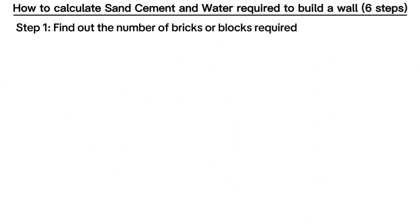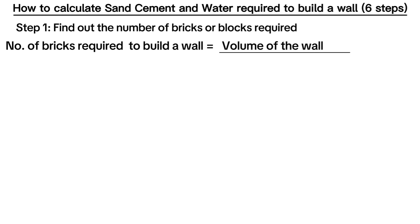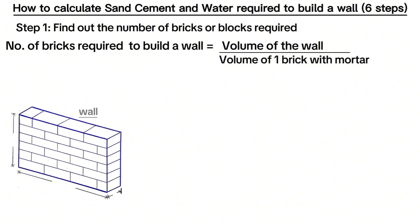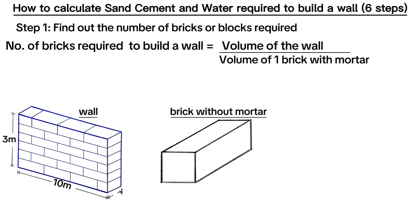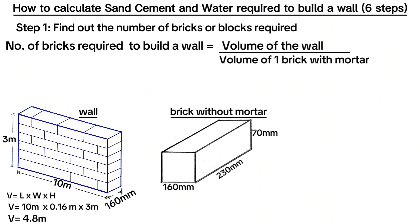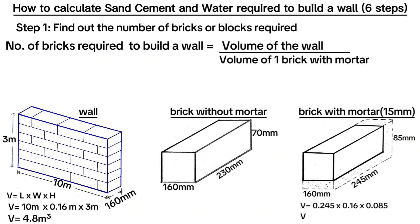The first step is to find out the number of bricks or blocks required to build a wall. For example, let's use bricks. Number of bricks required is equal to volume of the wall divided by volume of one brick with mortar. Considering a stretcher bond wall of 10 meters along the length and 3 meters along its height, with bricks of size 230mm along the length, 160mm along the wall thickness, and 70mm height. Volume of the wall is 4.8 meters cubed. Considering mortar thickness of 15mm, volume of one brick with mortar is 0.003332 meters cubed.